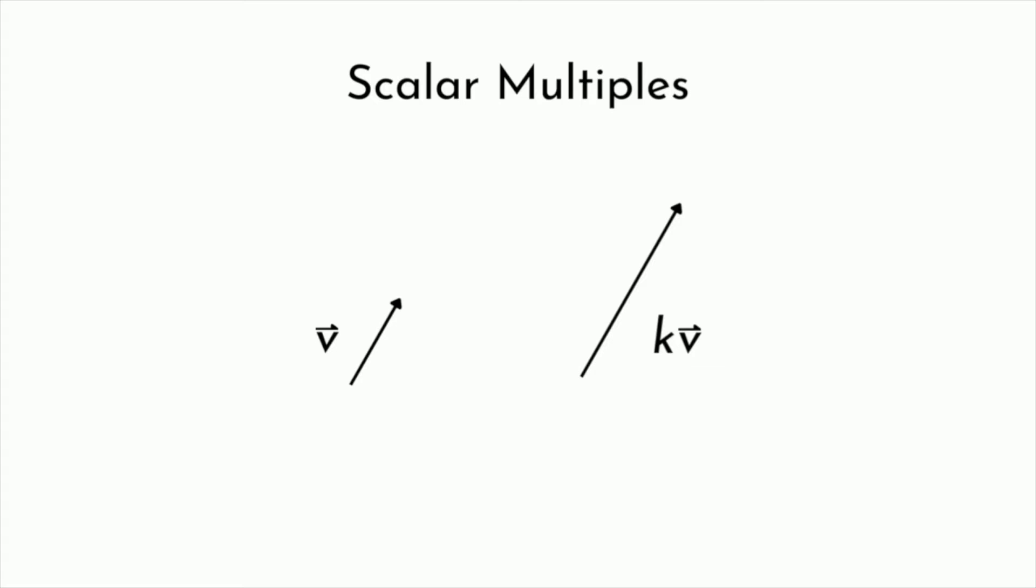Now in this little example, if you take a look, you can see that this vector on the right is actually twice the size of the original vector v. So in this case, we can say that the magnitude of vector v has been multiplied by two to produce a new vector, 2v. So that's the idea with scalar multiples. You can take some number, multiply it by the magnitude of a vector, and either increase or decrease its size.